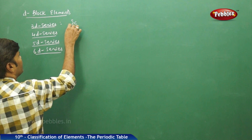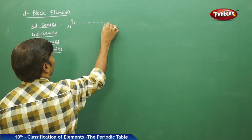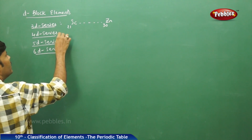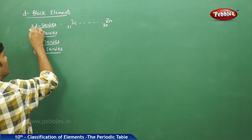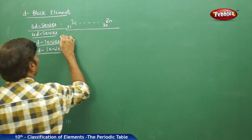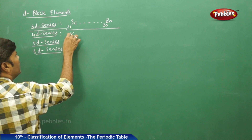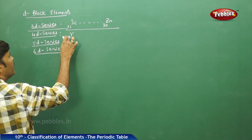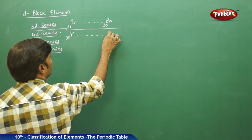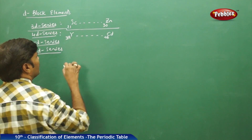If you take 3d series elements, it starts with scandium and ends with zinc. For the 4d series, it starts with yttrium (atomic number 39) and ends with cadmium (atomic number 48).